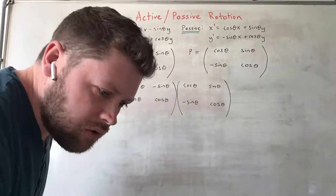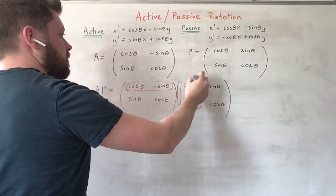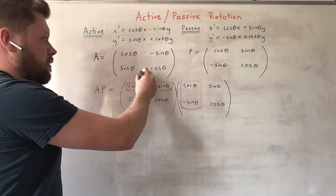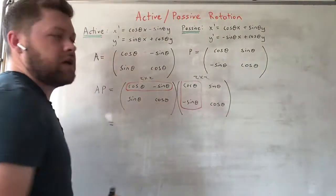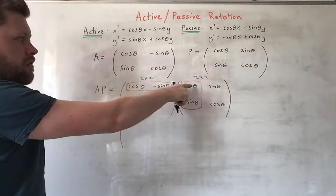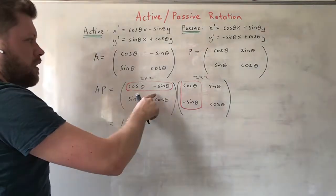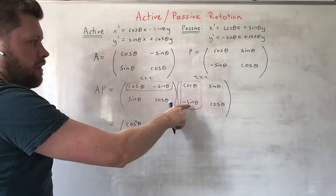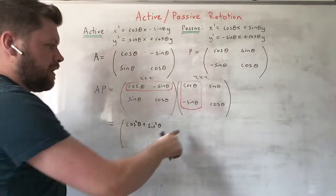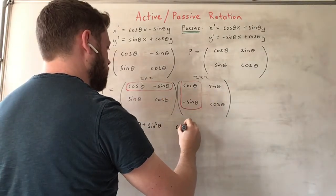We do it as normal — rows by columns. We're multiplying a two-by-two matrix by a two-by-two matrix, so we should get a two-by-two matrix as the result. Multiplying the first row by the first column: cosine θ times cosine θ is cosine squared θ, minus sine θ times minus sine θ is plus sine squared θ — that's the first element. The next element comes from the first row with the second column: cosine θ times sine θ.